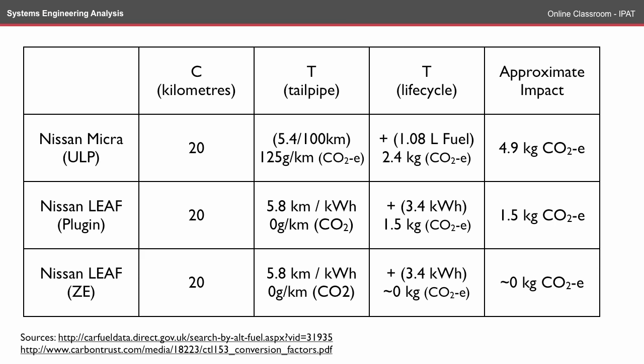We can then look at the Nissan Leaf in two different scenarios. The first being the plug-in, where you might be using the grid. In Canberra, that would be an approximate carbon dioxide equivalent of 1.5 kilograms for that 3.4 kilowatt hours of energy. If you were to use a zero emissions option, such as photovoltaics, then that would still be close to zero kilograms of carbon dioxide equivalent.